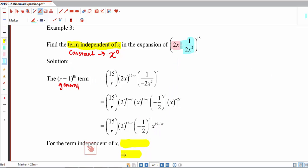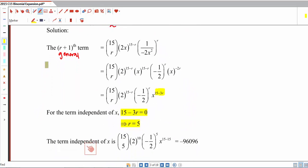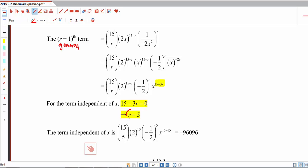So similar to what we have above, after we simplify, you'll realize that the power of your x in general is 15 minus 3r. So for the term independent of x, we will equate this to 0, because the constant term has x to the power of 0. And solving for r, we have r equals to 5. Substitute in r equals to 5 into the expression we have above.